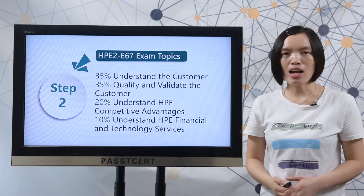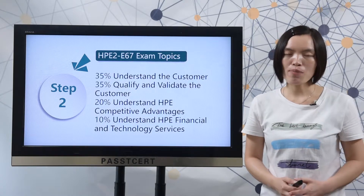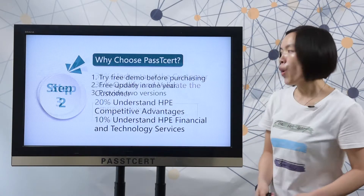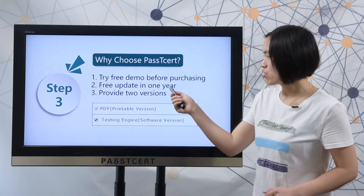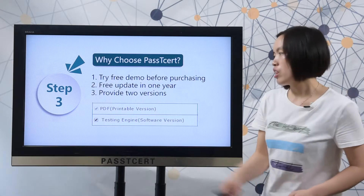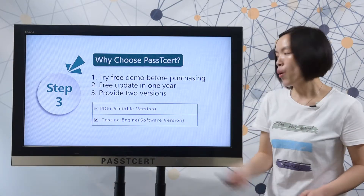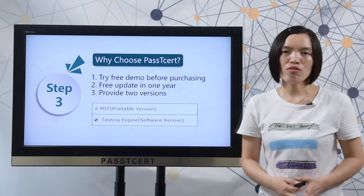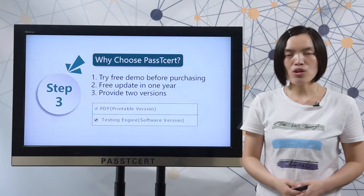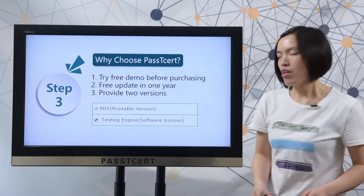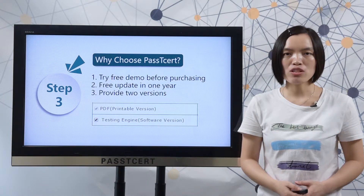Before you decide to take the test, you will search for material online. Let's view why choose PathDisorder material. One, you can try a free demo before purchasing. Two, PathDisorder provides free updates for 1 year. Three, PathDisorder provides 2 versions for this material. One is PDF — it is very easy and convenient for you to read and study all the questions and answers anywhere. The other is software version, which can help you feel the real exam environment.